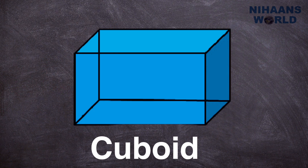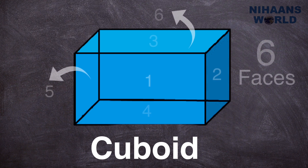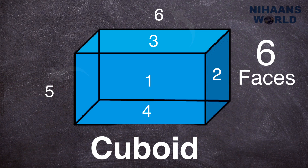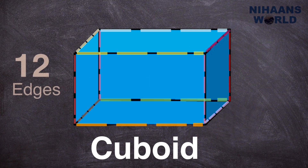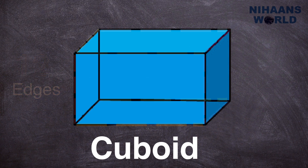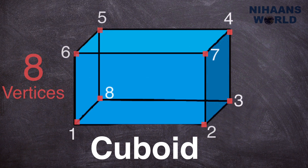Cuboid. A cuboid is a three-dimensional shape. A cuboid has the shape of a rectangular box. It has six faces, twelve edges and eight vertices.